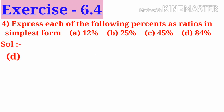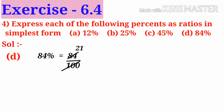D: 84 percent can be written as 84 by 100. On simplification by 4, we get 21 by 25. In ratio form, it can be written as 21 is to 25.